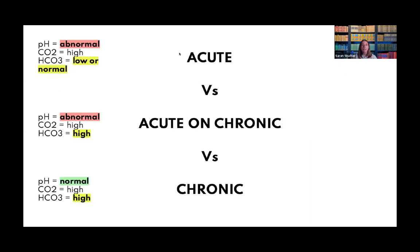With respiratory acidosis you can actually determine the timeline — whether it's acute or chronic — by looking at the bicarb. The bicarbonate tells us how long the respiratory acidosis has been going on, because kidneys take three to five days to respond to a lung issue. If the pH is abnormal and the bicarb is normal, this is an acute issue.